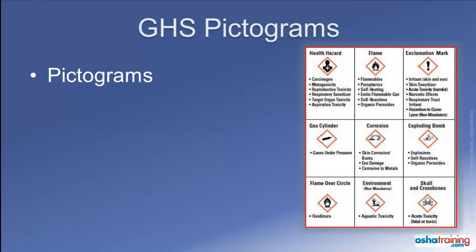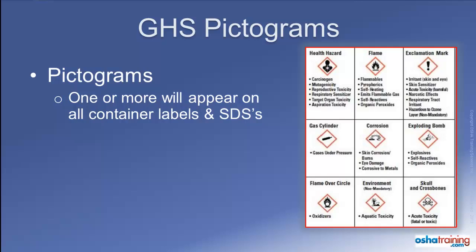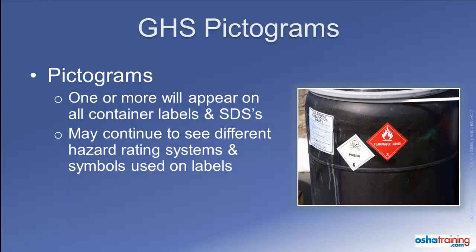At least one, but in many cases two, three, or even more of these pictograms will appear on the labels of containers of chemicals and products covered by the OSHA Hazard Communication Standard, as well as on safety data sheets. So read them and heed them, as you need to be aware of the hazards posed by the various products you use at work. Keep in mind that pictograms are not intended to replace all other hazard identification symbols, as some are required by other government agencies such as the Department of Transportation or Environmental Protection Agency.